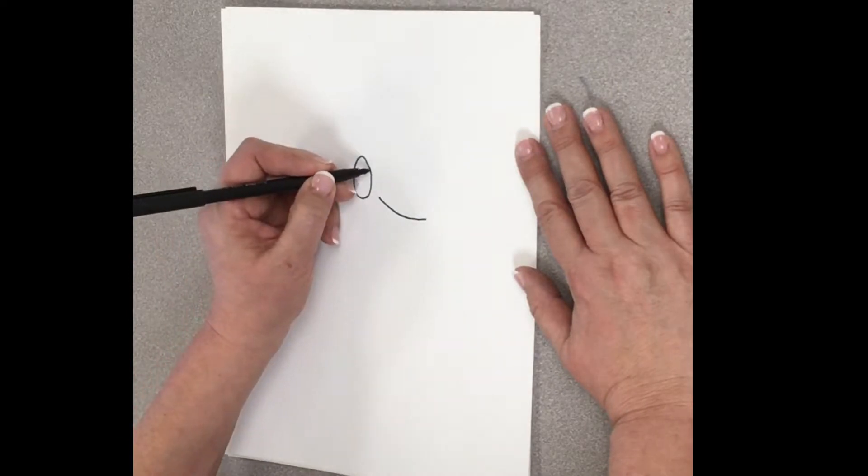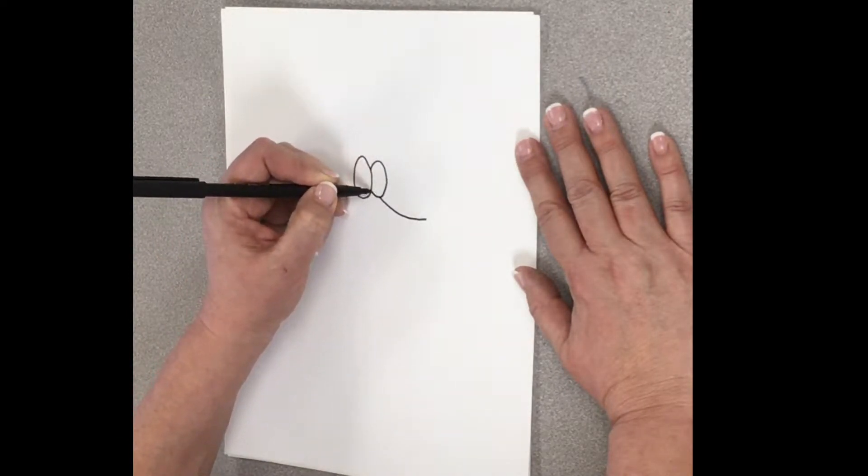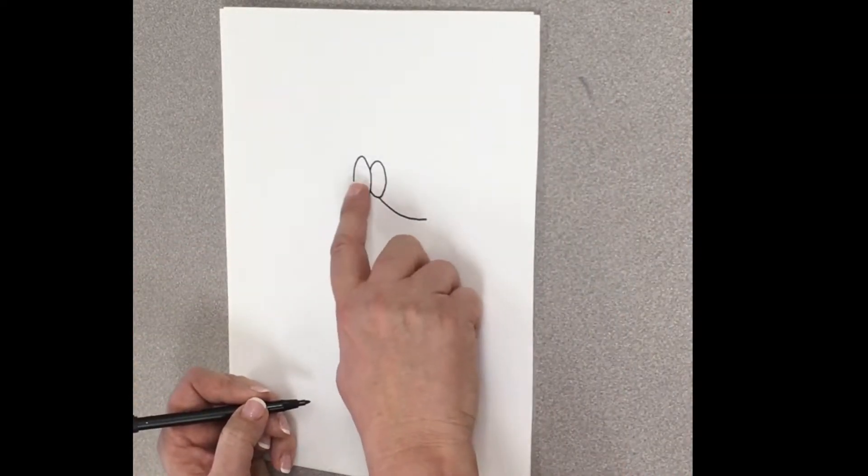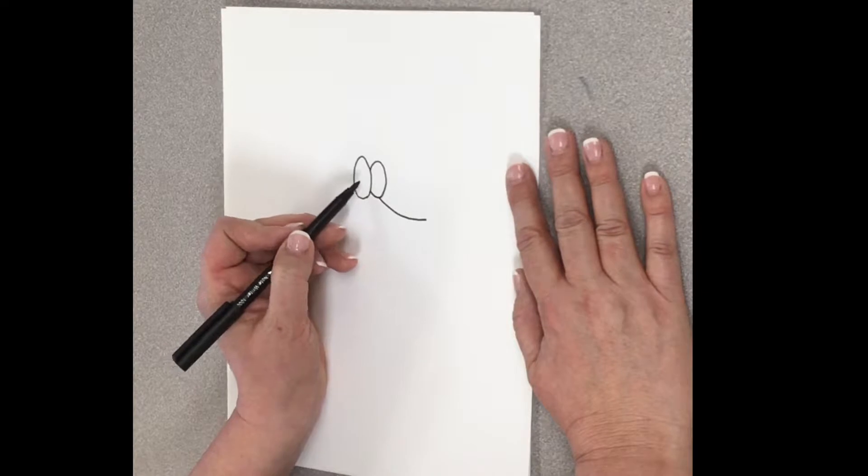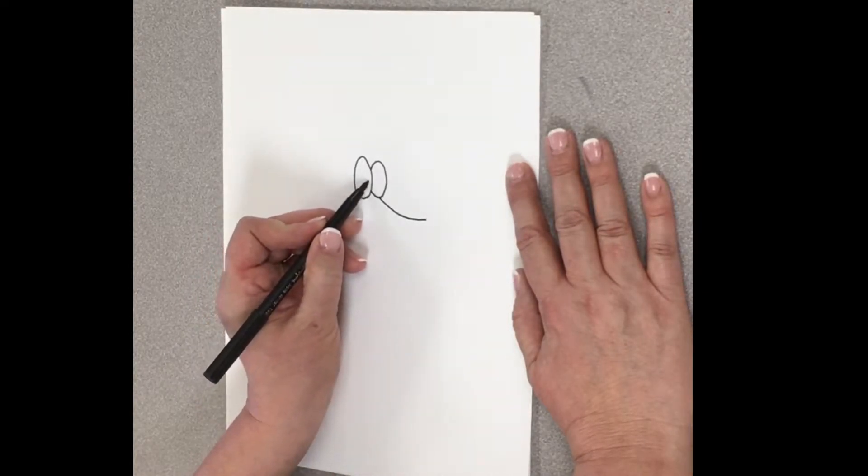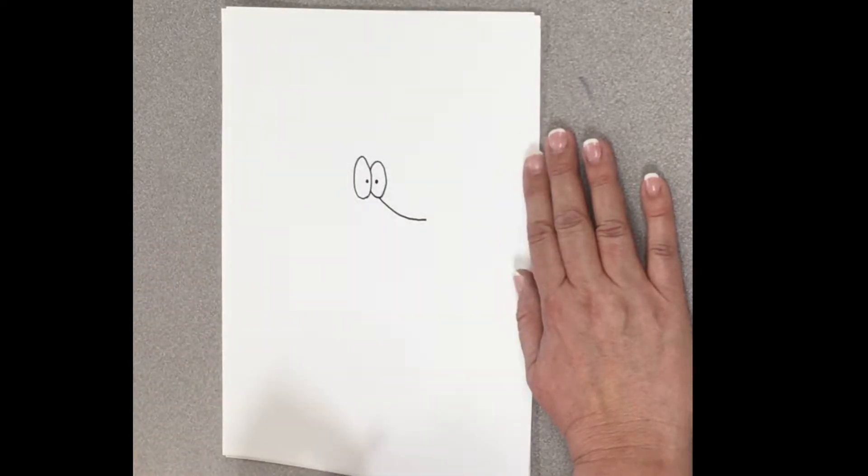And then next to it, we're going to draw another oval, but it's going to be overlapping. Okay, so this one is a little smaller than this one. And guess what these are? His eyeballs. Oh, there you go, pup.